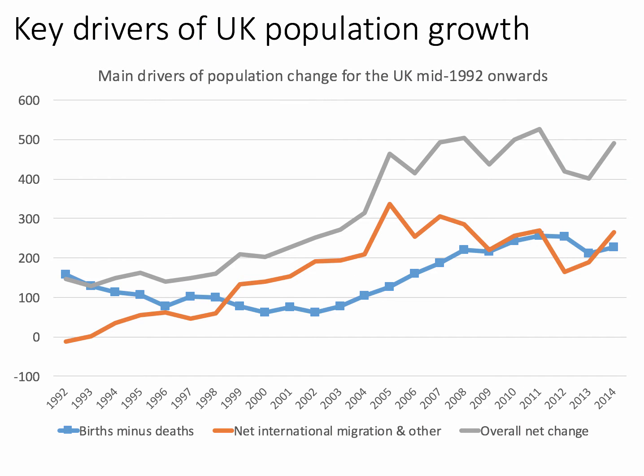There are two key drivers of population growth. The first is natural population growth, which is the birth rate minus the death rate. Following the blue line in this chart, we can see that natural population growth has edged up in the last 10 to 15 years — from under 100,000 per year to over 200,000 per year. In 2014, growth due to birth rate minus death rate was just over 200,000 people.